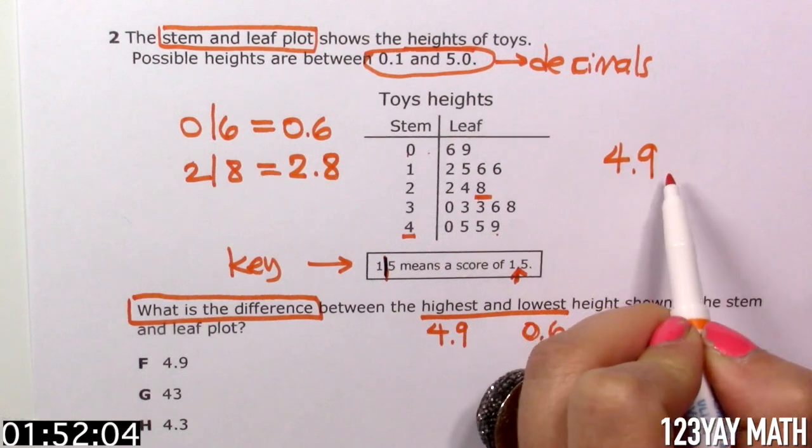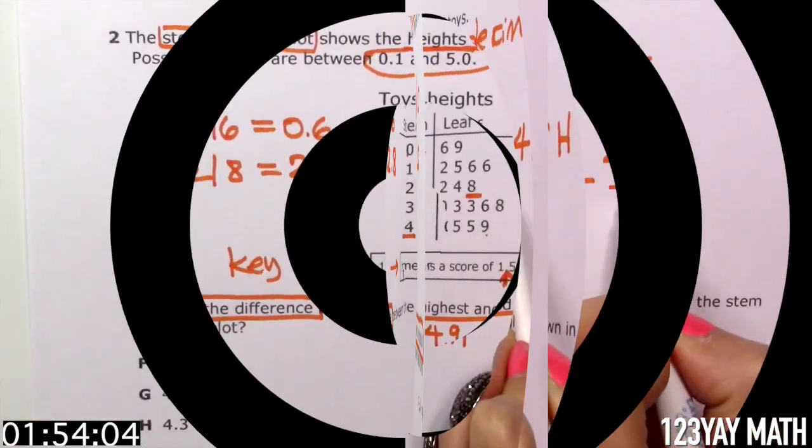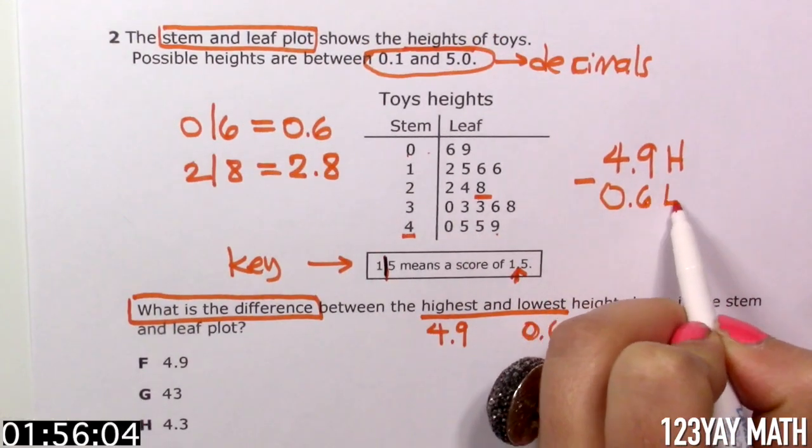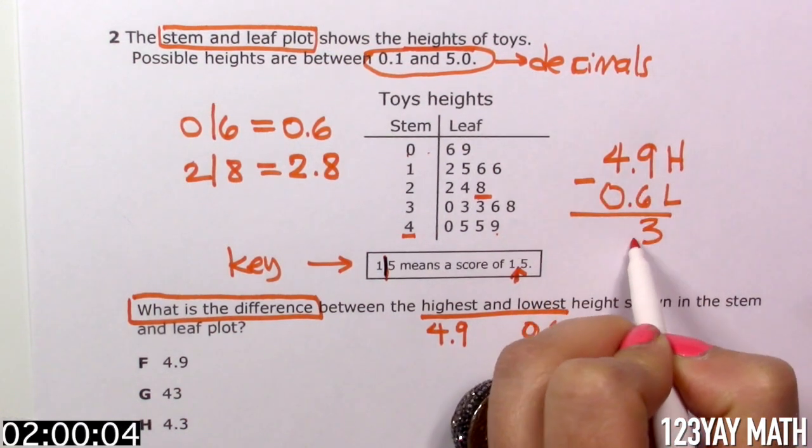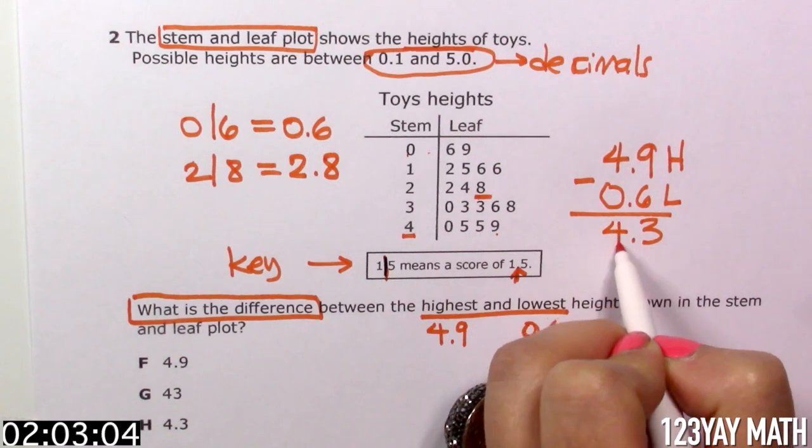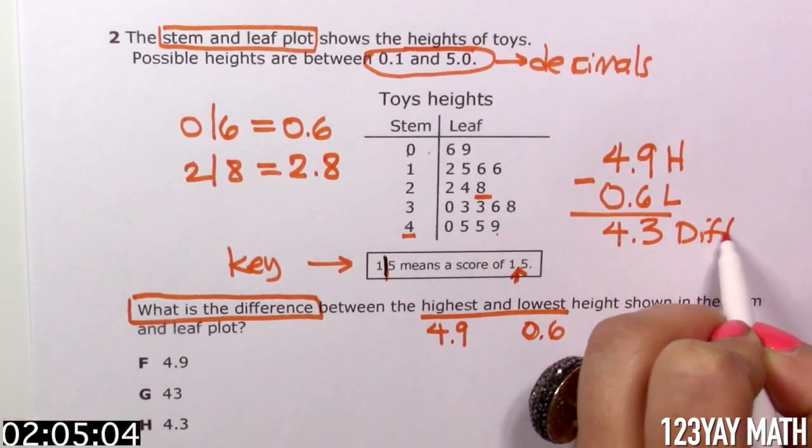4.9, this is the highest, minus 0.6, this is the lowest. 9 minus 6 is 3. Decimal point, 4 minus 0 is 4. This is the difference.